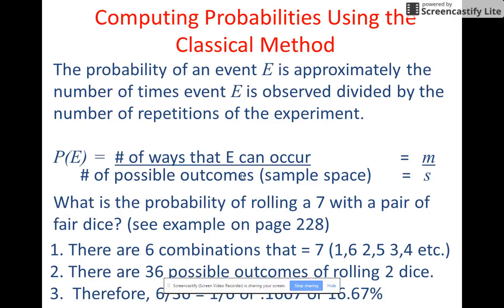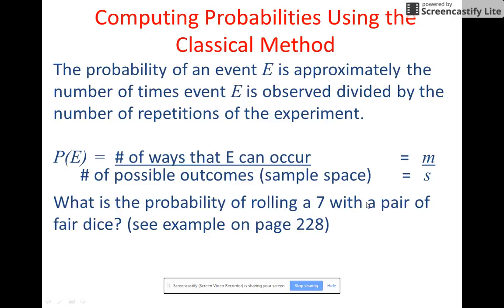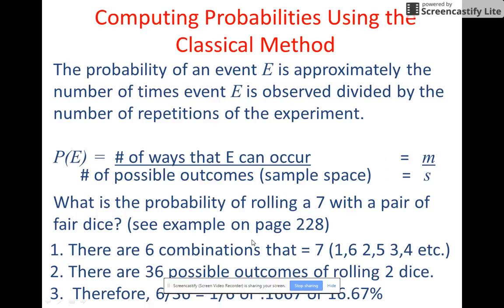Now, so let's talk about what is the probability of rolling a seven with a pair of fair dice. There are six combinations of two dice that equal seven. You can get a one and a six or a two and a five, a three and a four, a four and a three, a five and a two, or a six and a one. So since there's 36 possible outcomes, you would divide six by 36. So you would get 16.67%, one sixth, if you will.